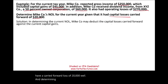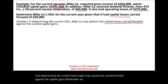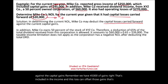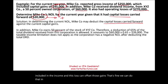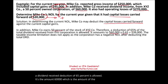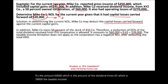In determining the current NOL, Mike may deduct the capital loss carried forward against the capital gain. We have $45,000 of gains included in the income, and this loss can offset those gains. In addition, since Mike owns 50% of XYZ Corporation, a dividend received deduction of 65% is allowed — that's $60,000 times 65%, which equals $39,000.